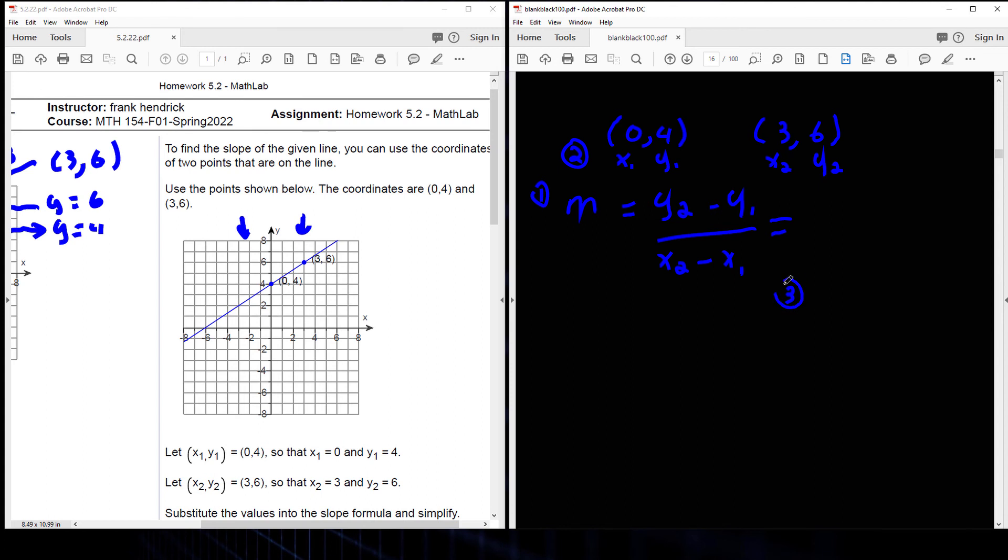Now I'm going to plug in. Where I see a y sub 2, it's going to be a 6, minus y sub 1 which is a 4, divided by x sub 2 which is a 3, minus x sub 1 which is 0. Set it up completely first, then do your computation. 6 minus 4 is 2, 3 minus 0 is 3.